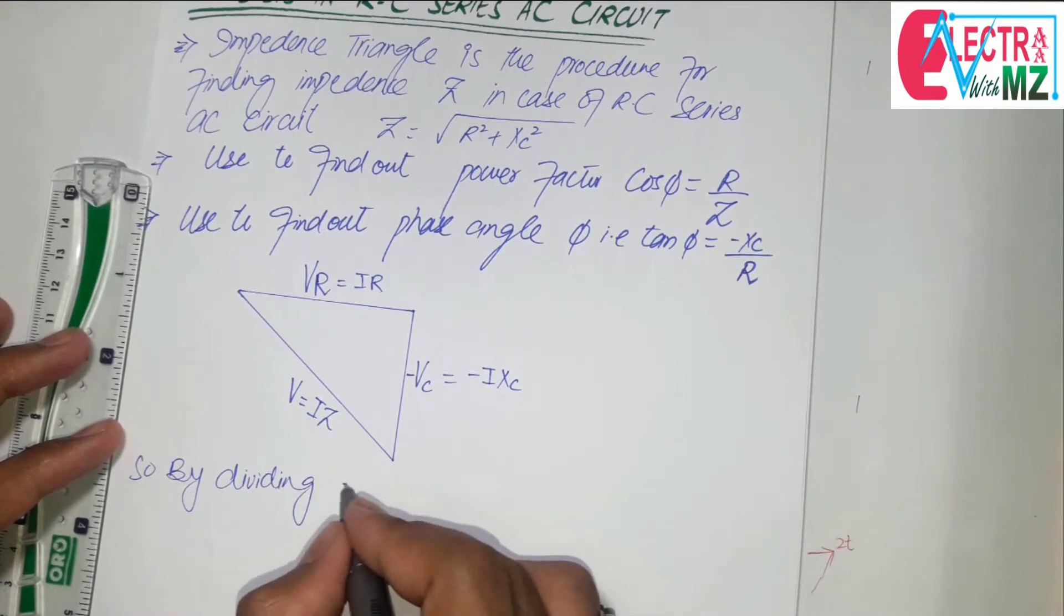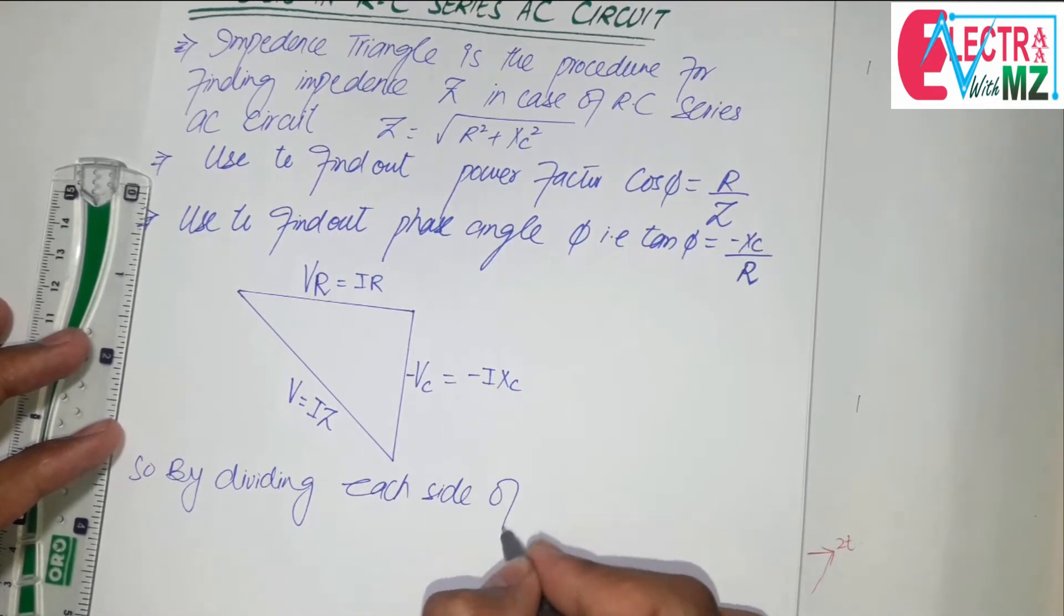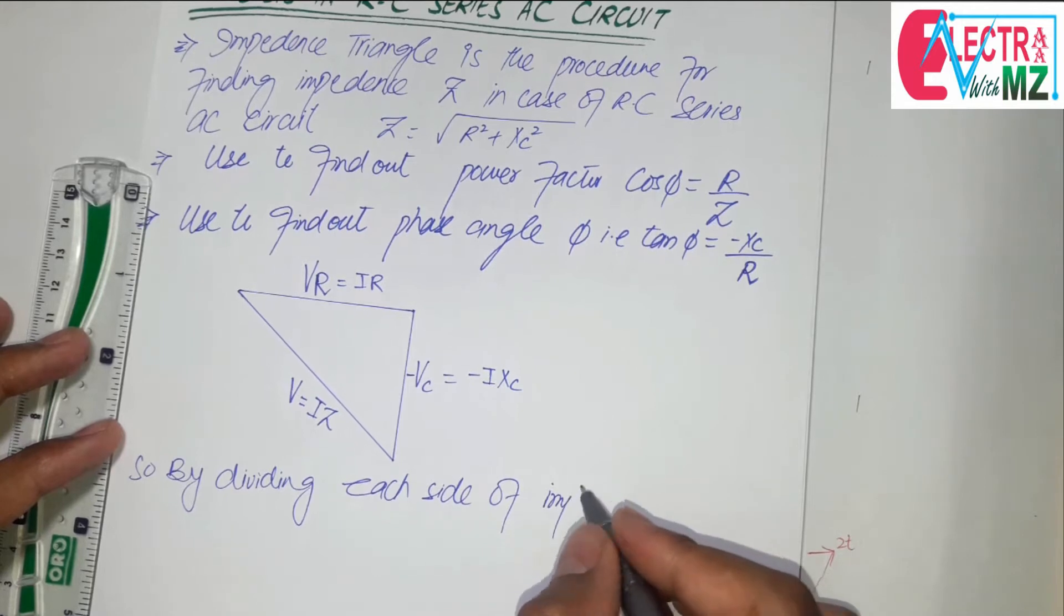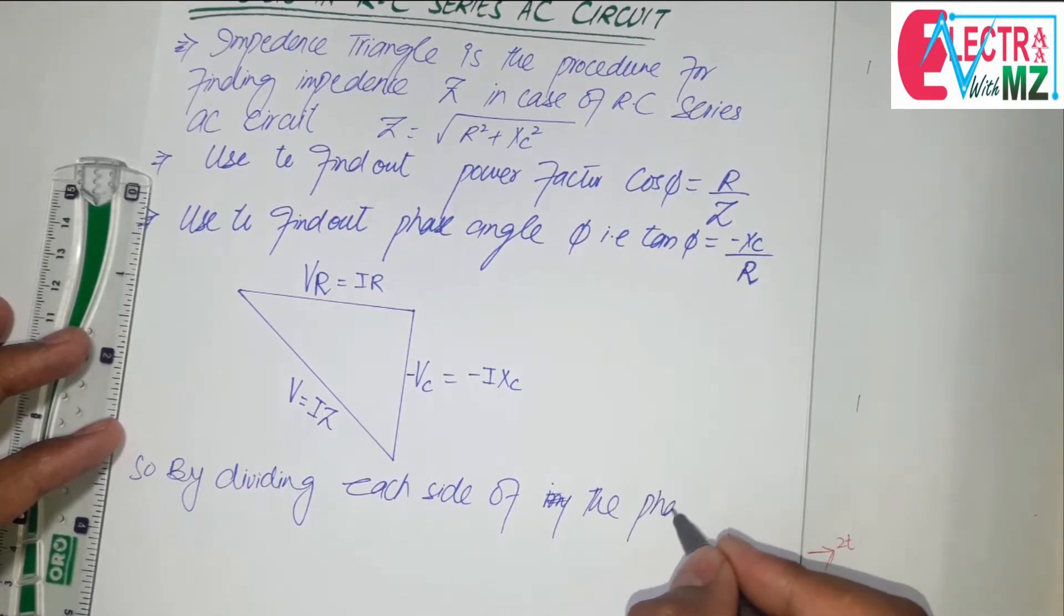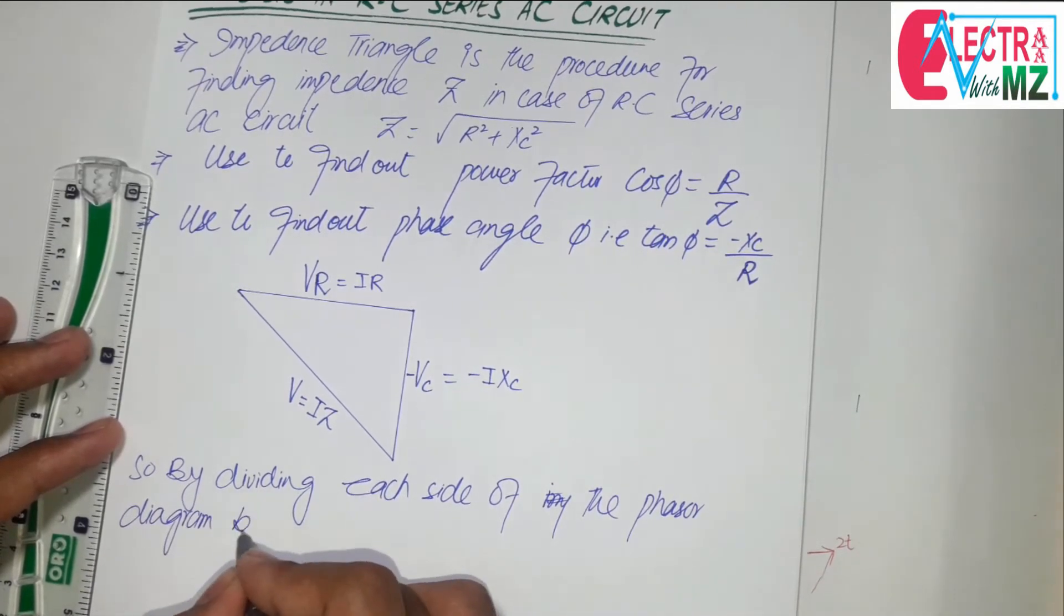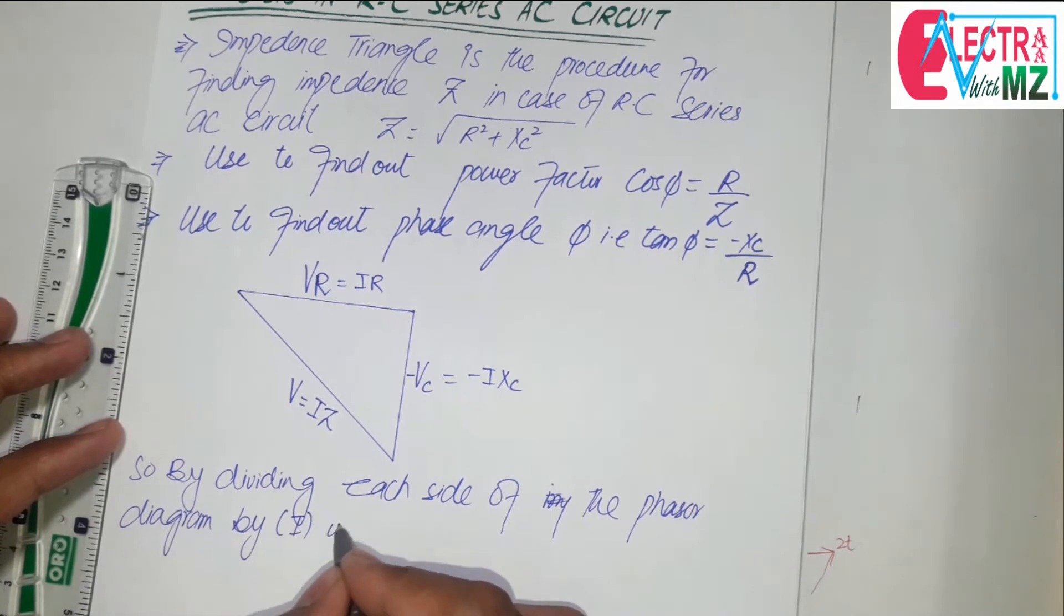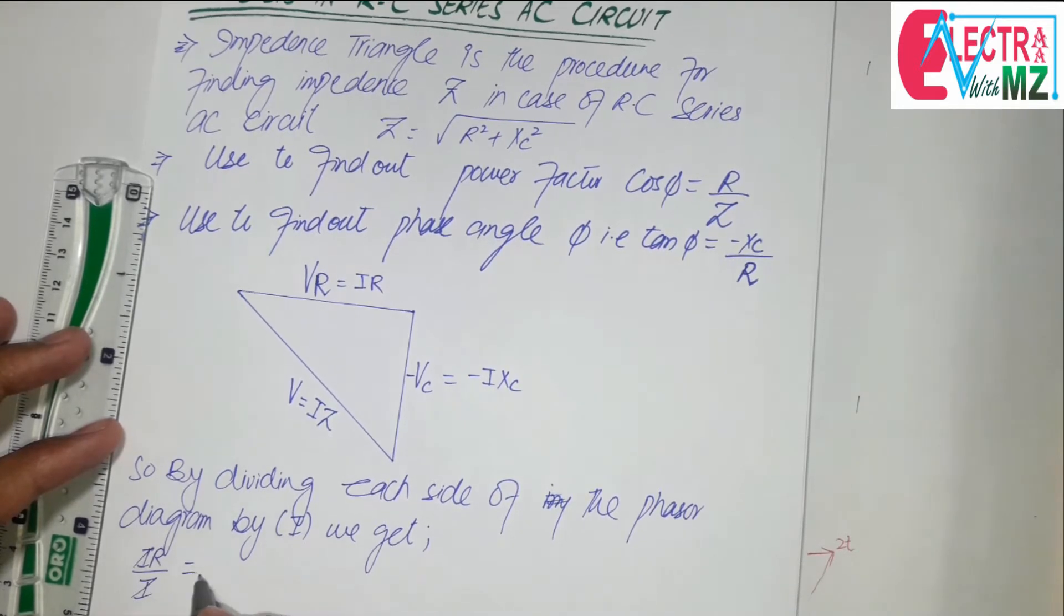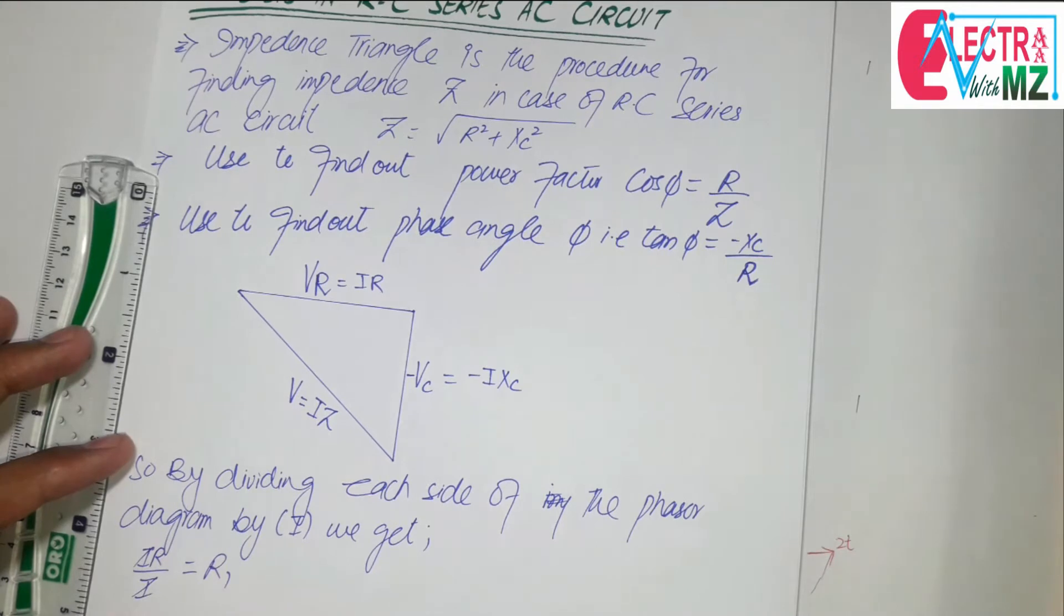So by dividing each side of the phasor diagram by I we get: IR divided by I is equal to R, IZ divided by I is equal to Z, and minus IXC divided by I is equal to minus XC.